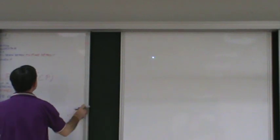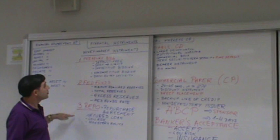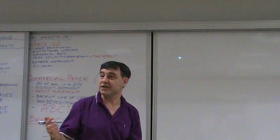You can see money market instruments. One, two, three, four, five, six, seven. Let's just write quickly capital market instruments. This is financial economics, capital market instruments.